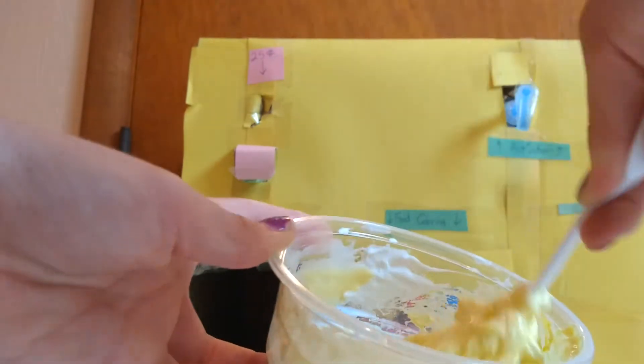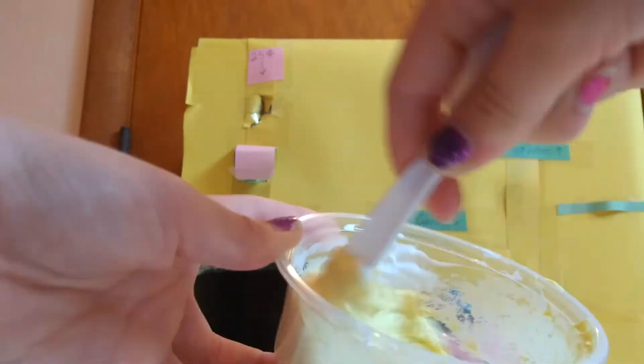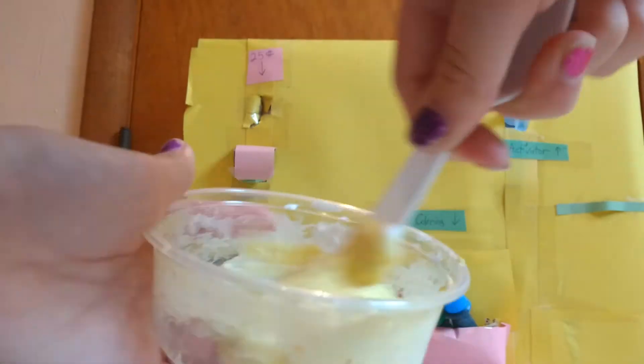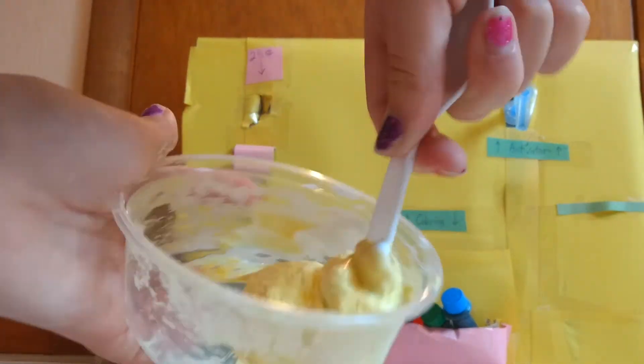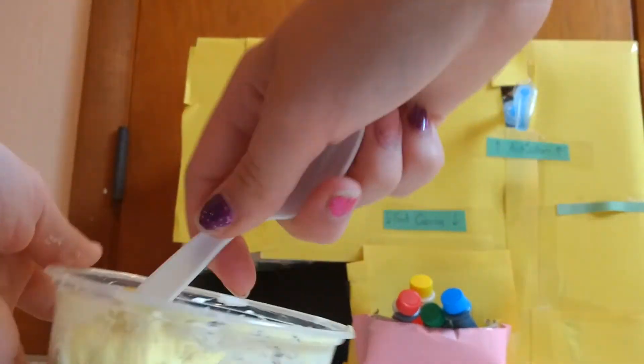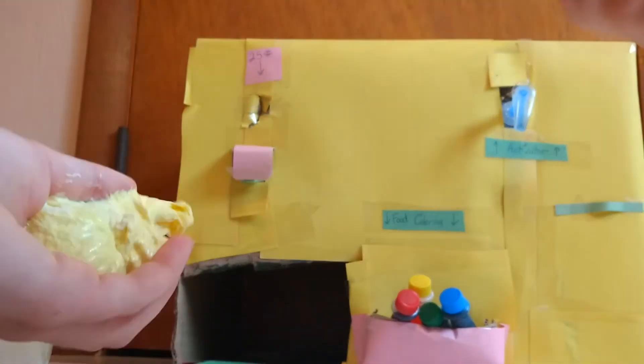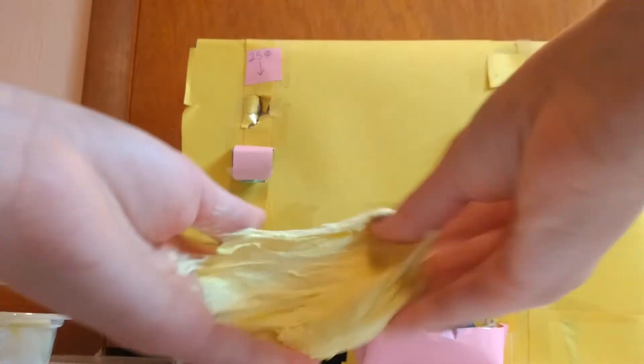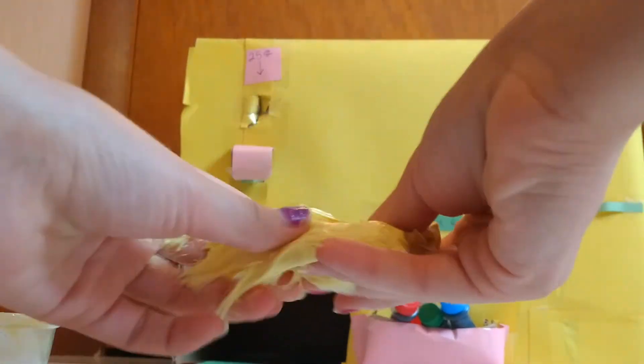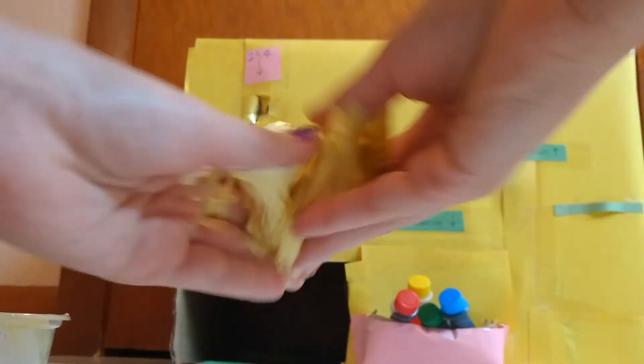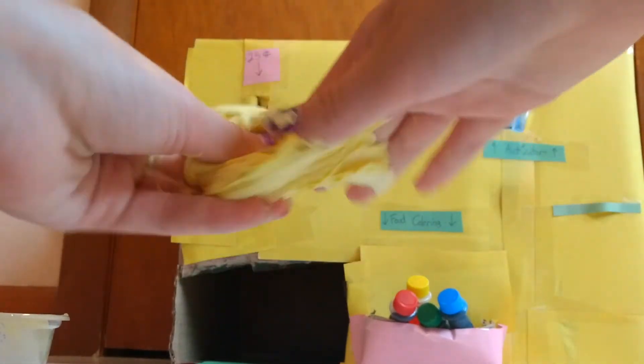Once it starts to look a little bit better, then I will go ahead and start kneading it, which would probably be right about now. And I don't know if I mentioned this in the beginning of the video, this is supposed to be fluffy slime. I don't think I mentioned that, but you can tell that it's fluffy, very fluffy.